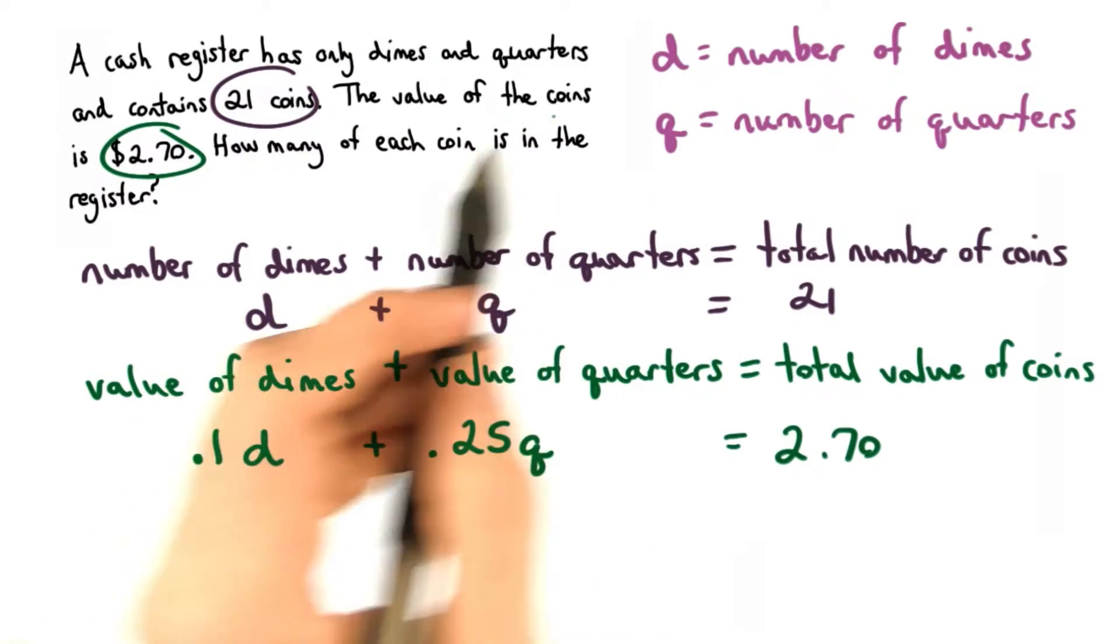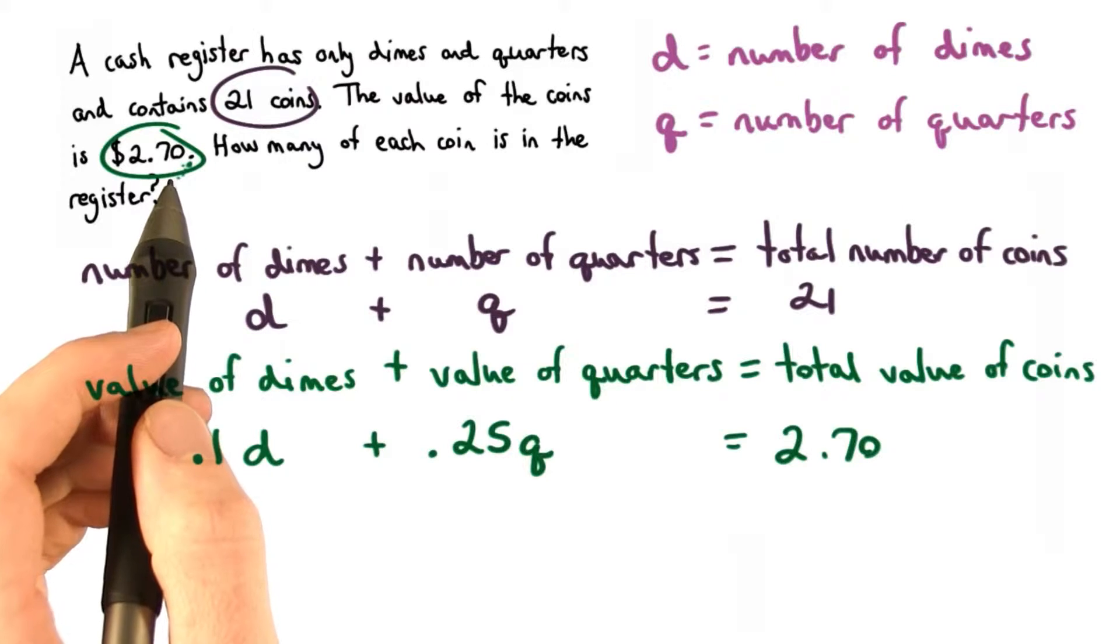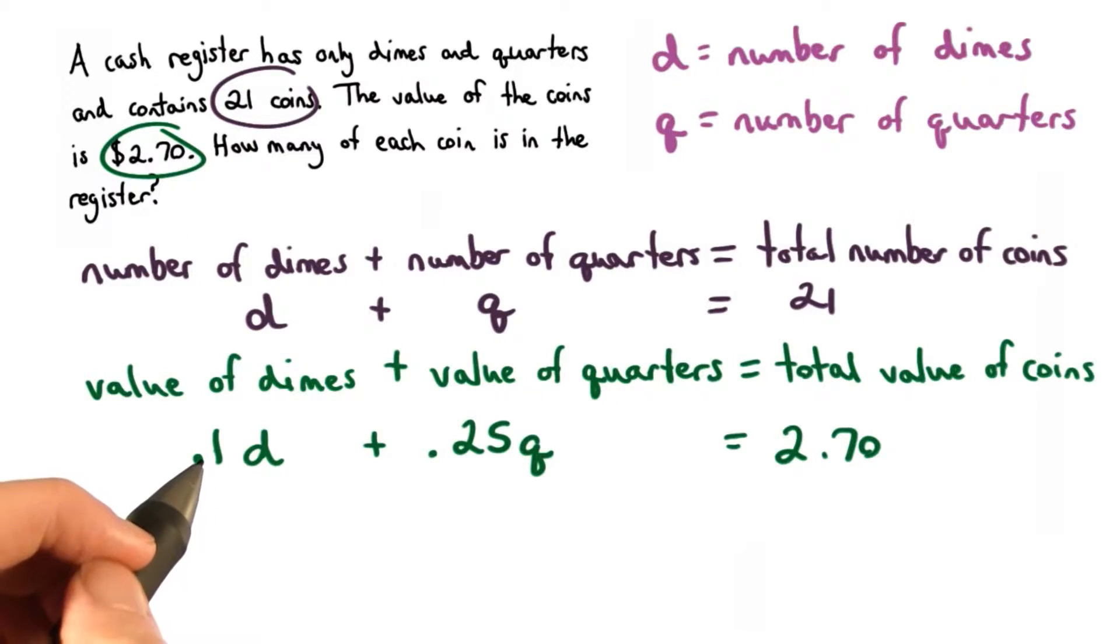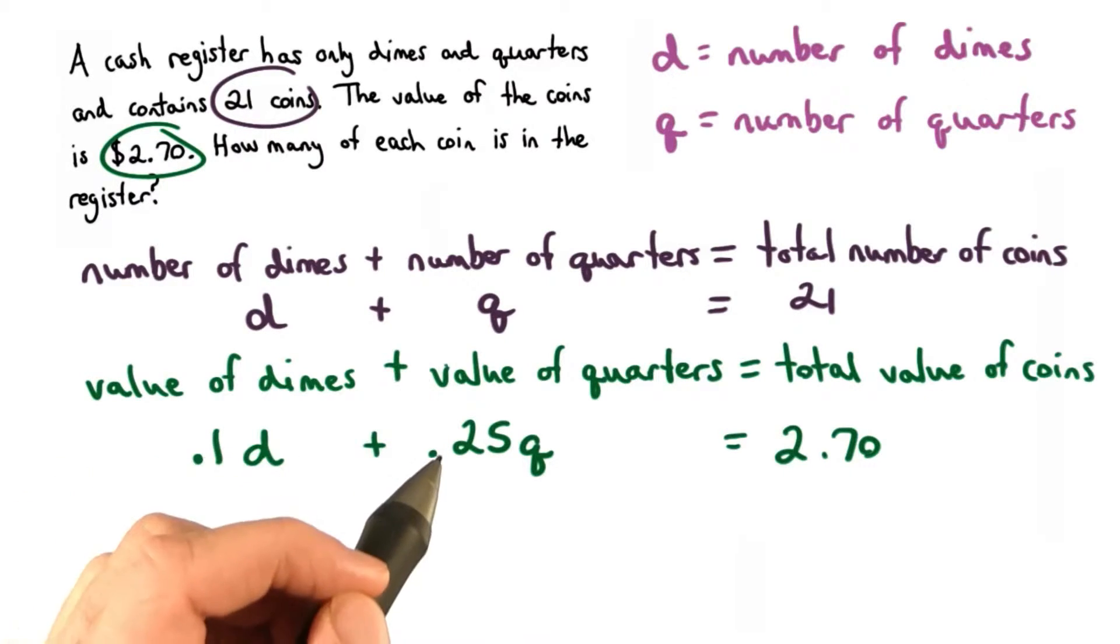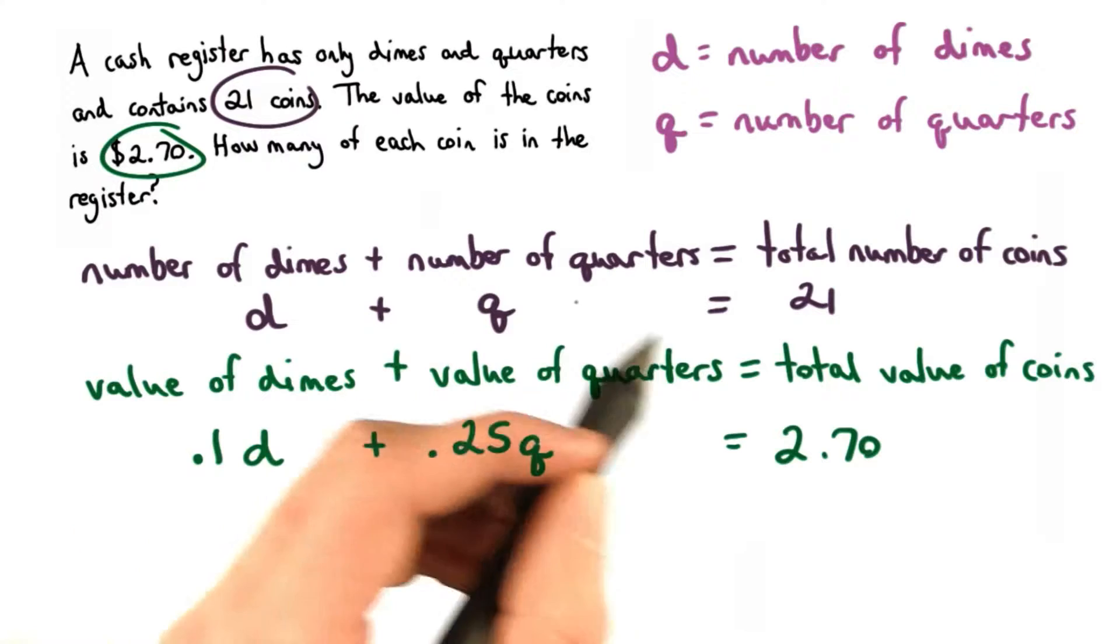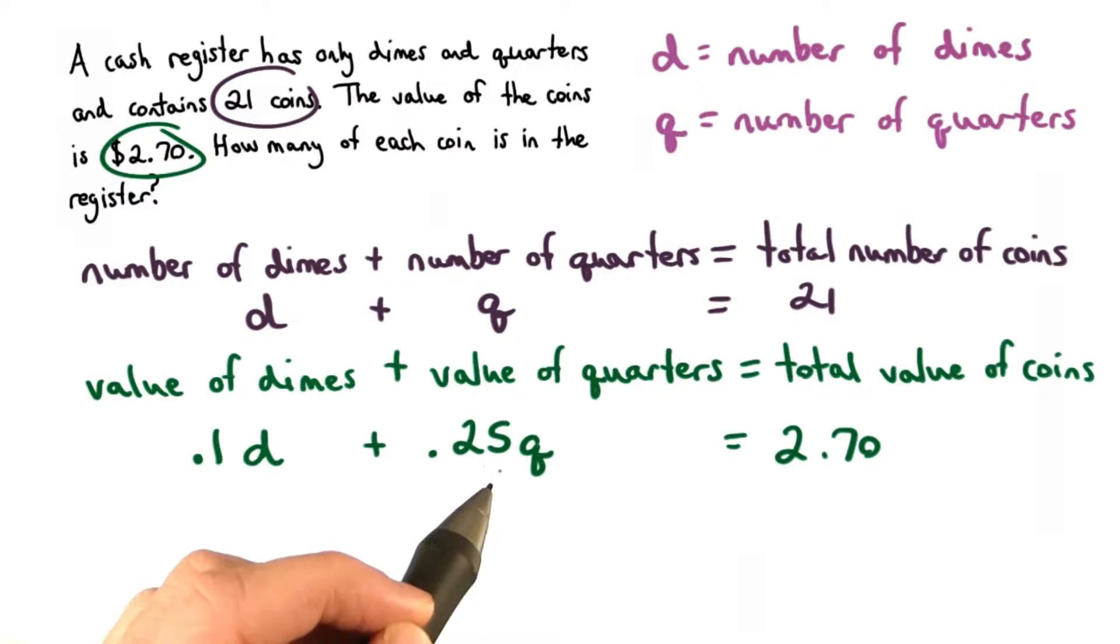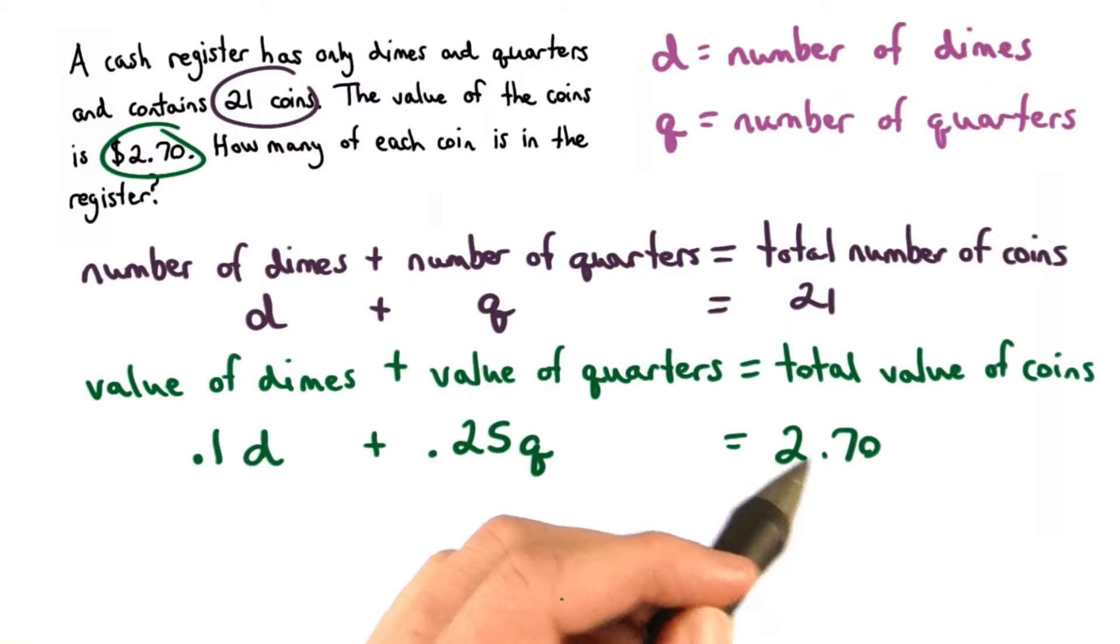We know the total value of the coins is $2.70. A dime is worth 10 cents, so to get the value of dimes, we multiply 10 cents by the number of dimes we have. A quarter, on the other hand, is worth 25 cents, so to get the value of the quarters, we multiply 25 cents times our number of quarters, q. And if we add these two values together, we should get $2.70.